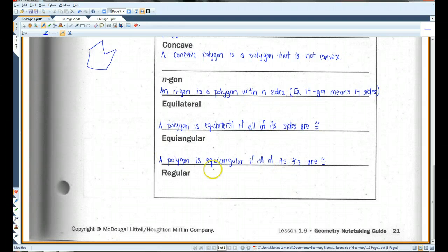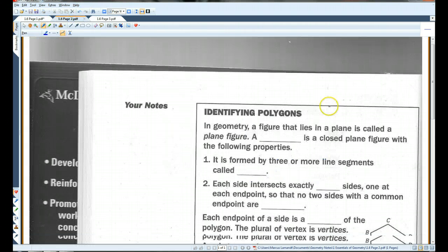A polygon is regular if it is both equilateral and equiangular. That means all the sides and all the angles are congruent. All right. Let's go on to page two. Follow whenever you're ready.